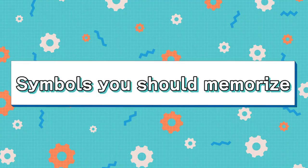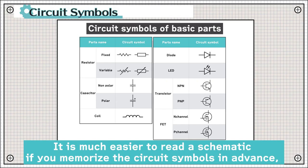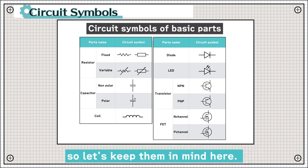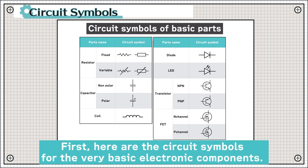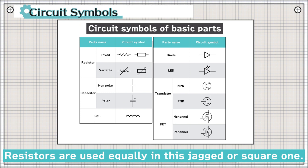Next, I will introduce the circuit symbols that you should memorize at the minimum. It is much easier to read a schematic if you memorize the circuit symbols in advance, so let's keep them in mind here. So I have compiled a list of them. First, here are the circuit symbols for the very basic electronic components. Resistors are used equally in this jagged or square one.